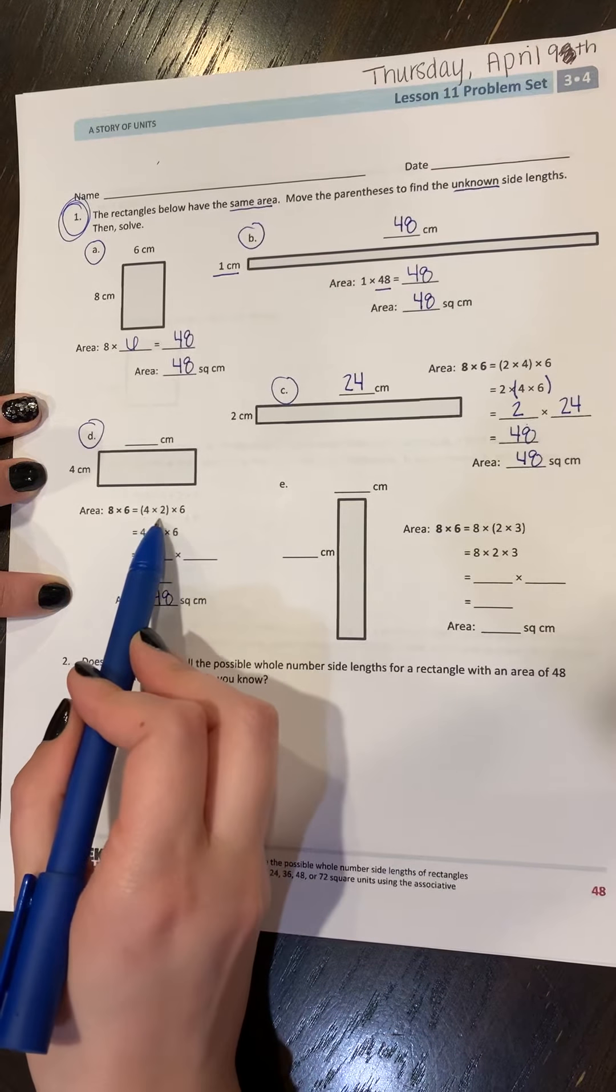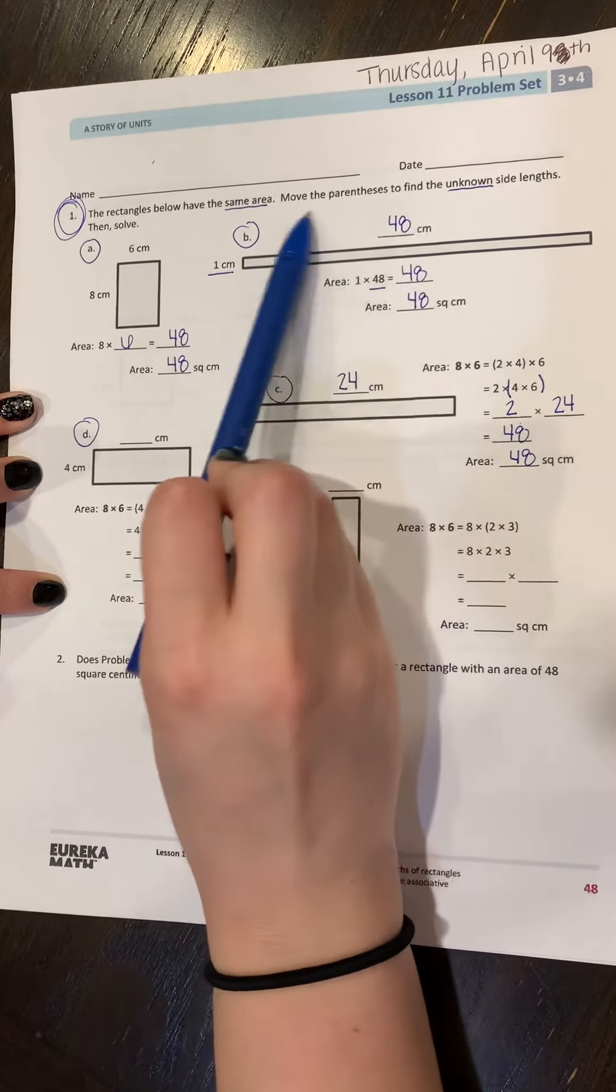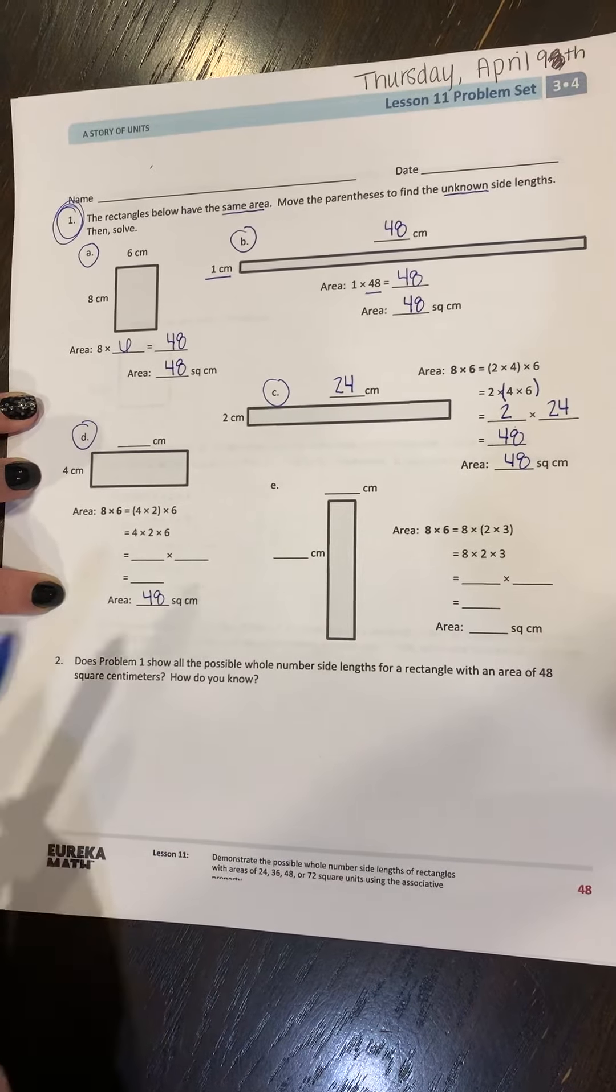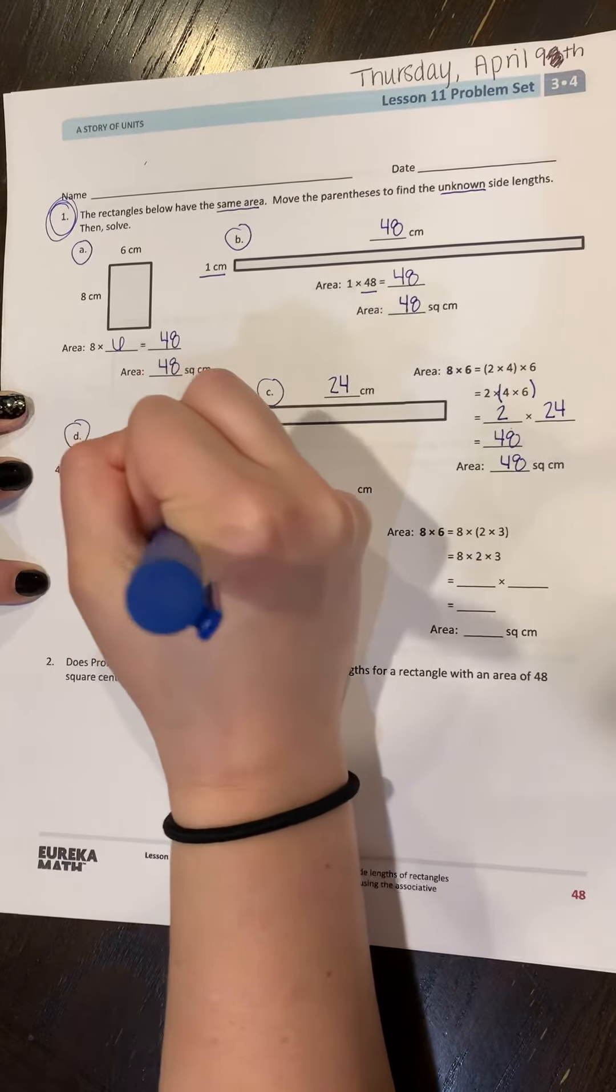But what we're doing is we're looking for this missing side. So we've done four times two times six is how this is set up for us. But if we go back to our directions, all we're doing is moving the parentheses over. So instead of it being around four times two, we're going to move it so it's around two times six, and we're going to solve.